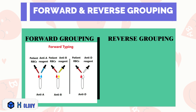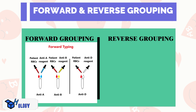In forward grouping, it utilizes antisera which contain antibodies specifically directed against A and B antigens. These antisera are added to a suspension of the patient's red blood cells. If the patient's red blood cells possess the corresponding antigen A or B, they will agglutinate or clump together due to the antigen-antibody reaction.